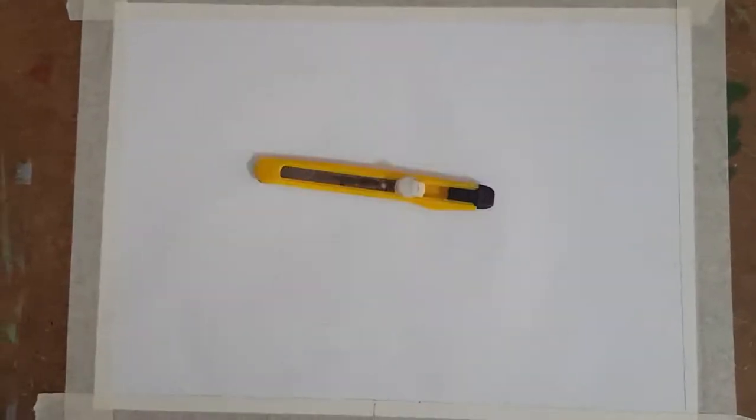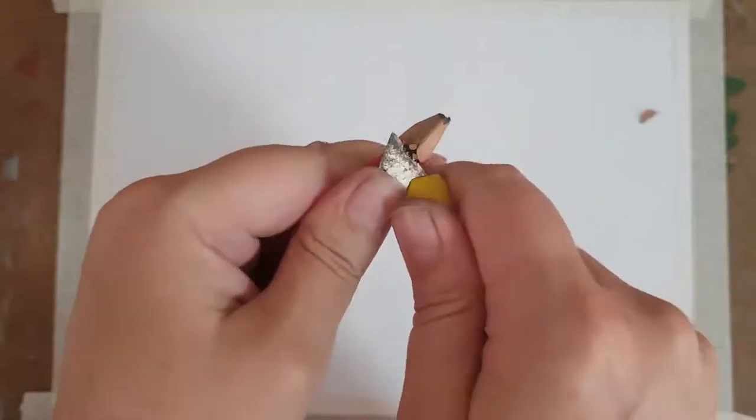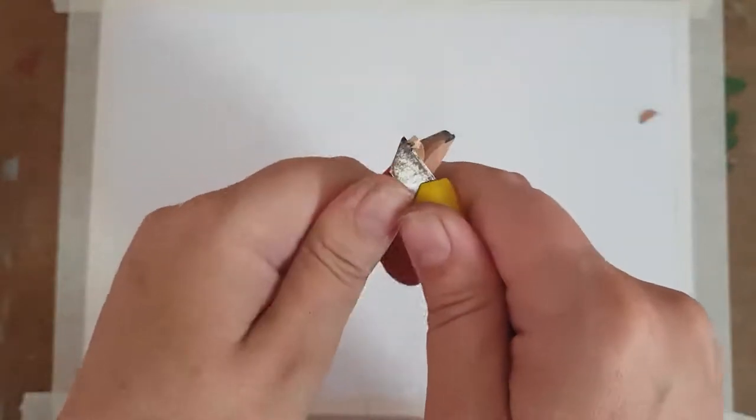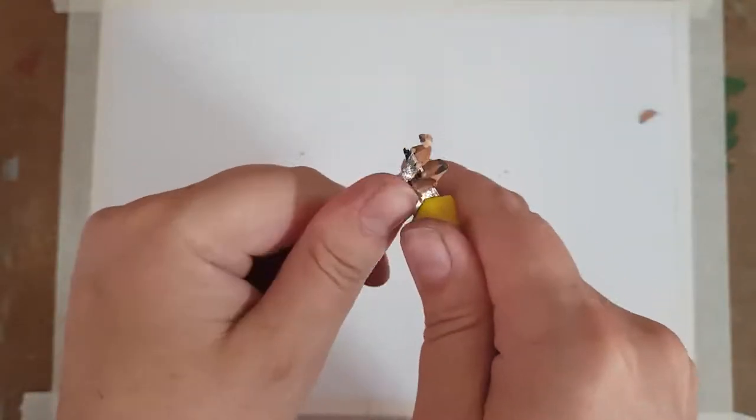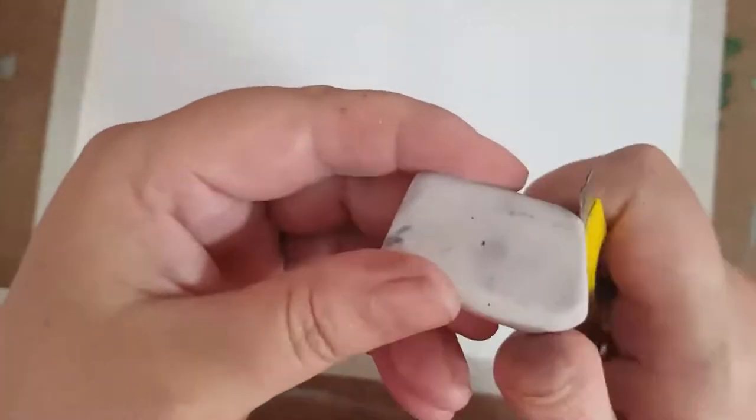The next item comes in very handy. A cutting tool or Stanley knife. I use it to cut my paper free from my hardboard instead of pulling off the tape, risking tearing. I use it to create sharp edges on my pencil and very handy.